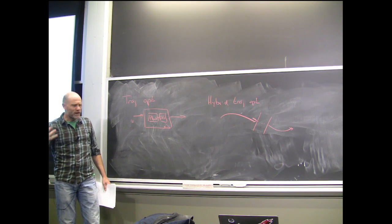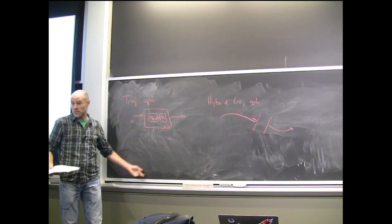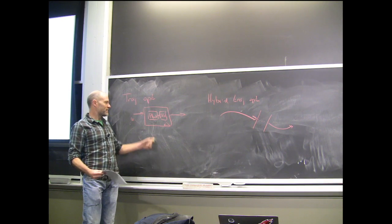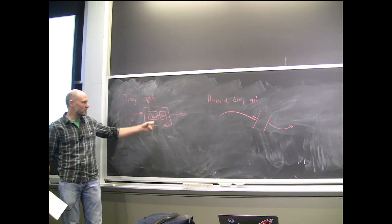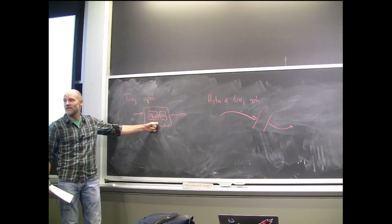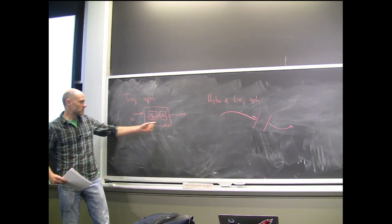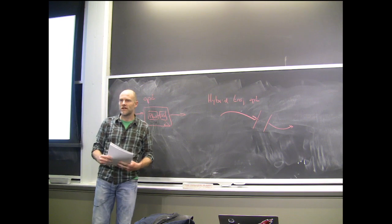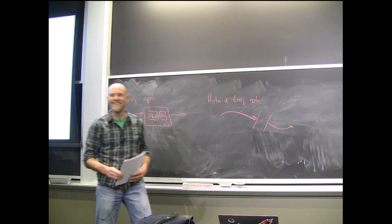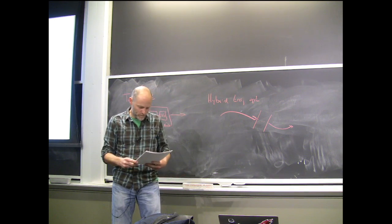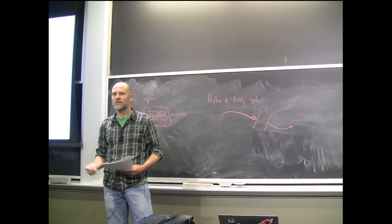I'm trying to understand why this issue came up more this year than in previous years. I think maybe multi-body plant gets farther — people are getting farther without realizing they've put themselves into a hard numerical situation. I think we support a little bit more gradients through contact than we did last year, which lets you get into a slightly deeper well. When these themes bubble to the top, I'll mention them in lecture because I think it's good to learn.